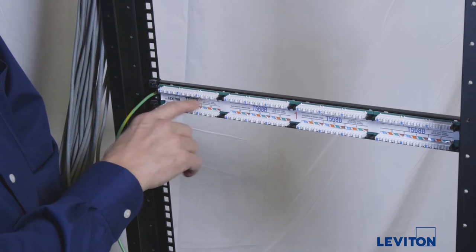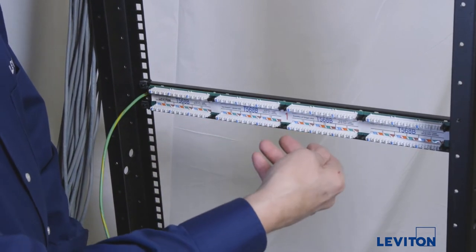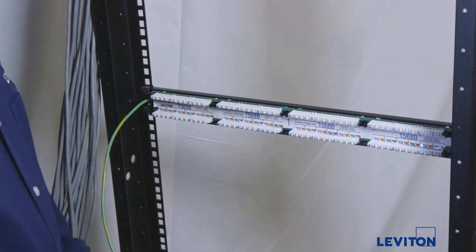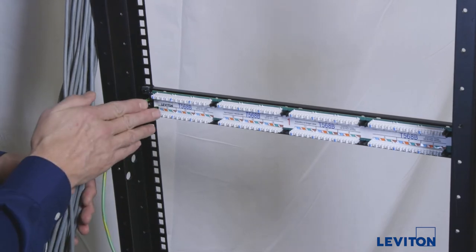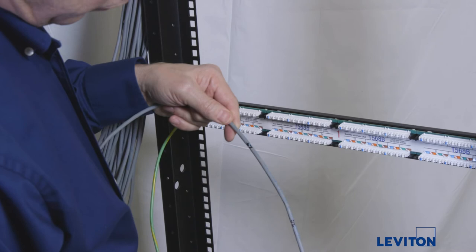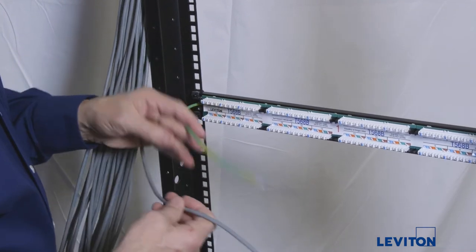The patch panel's wiring card includes a diagram for T568B wiring on one side and T568A wiring on the other. We are using the T568B wiring for this demonstration. Terminate each cable in the bundle working from left to right, starting at port 24.